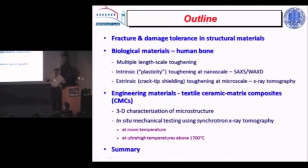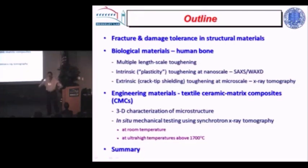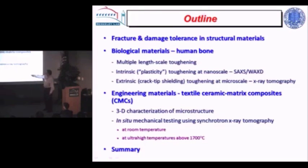I want to talk about fracture — why things break and where those resistance properties come from in a material. They come at multiple length scales. I'll look at two examples. A biological material, which is human bone, and look at where these properties come from and how they can degrade by aging. I'm going to talk about intrinsic and extrinsic toughening, which are different forms of toughening. The intrinsic ones come at the nanoscale and the extrinsic ones come at coarser scales.